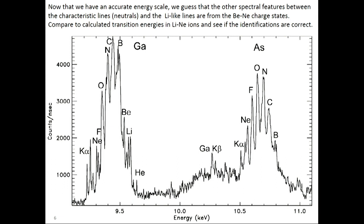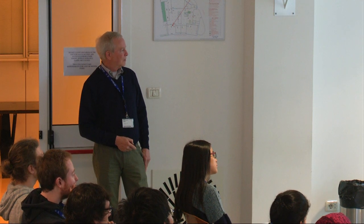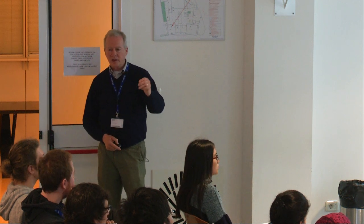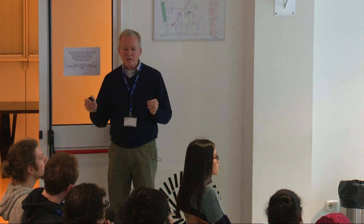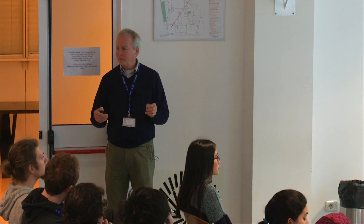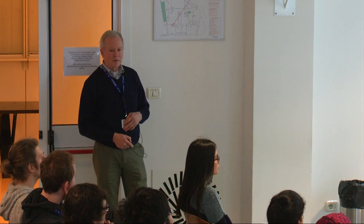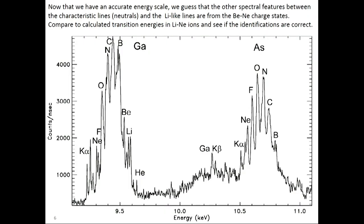Similarly in arsenic — but what's the difference between the gallium spectral line distribution and the arsenic? Something is missing from the arsenic. Arsenic is a higher-Z element, so it's somewhat less ionized. The helium-like and lithium-like lines appear to be missing from the arsenic spectrum, and that's what you would kind of expect. So things are looking good so far.